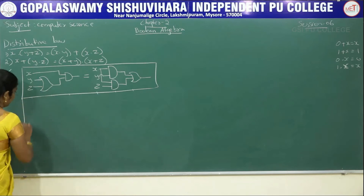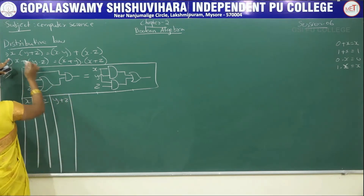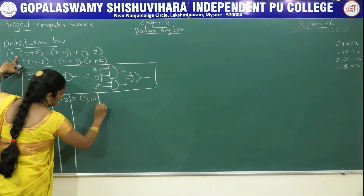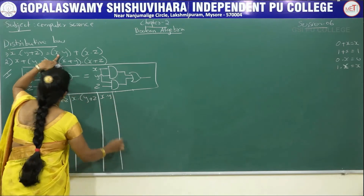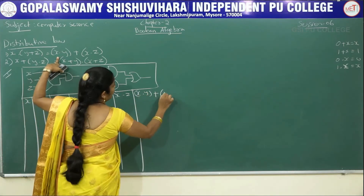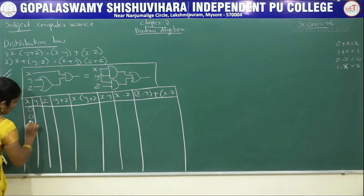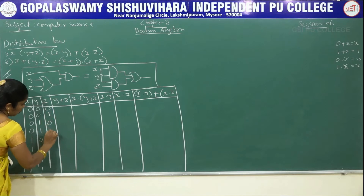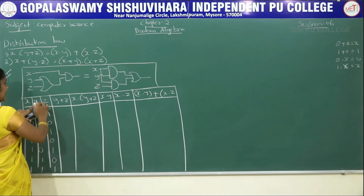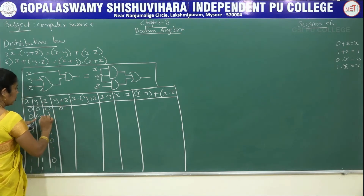Now we write the truth table. We have three variables x, y, and z. We will find y plus z, then x into (y plus z), then x·y, x·z, and finally x·y plus x·z. For three variables we have eight rows: four zeros then four ones for x, alternating two zeros and two ones for y, and alternating 0,1 for z.